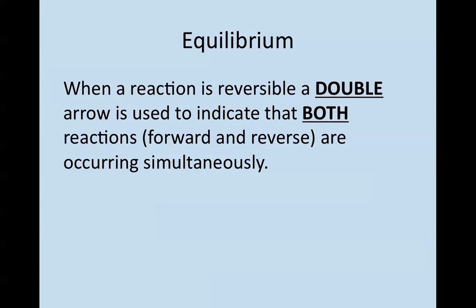When a reaction is reversible, we use a double arrow, and this indicates that both the forward and reverse reactions are occurring at the same time.